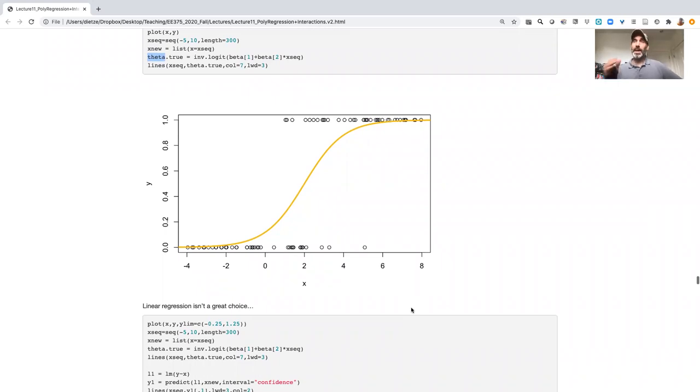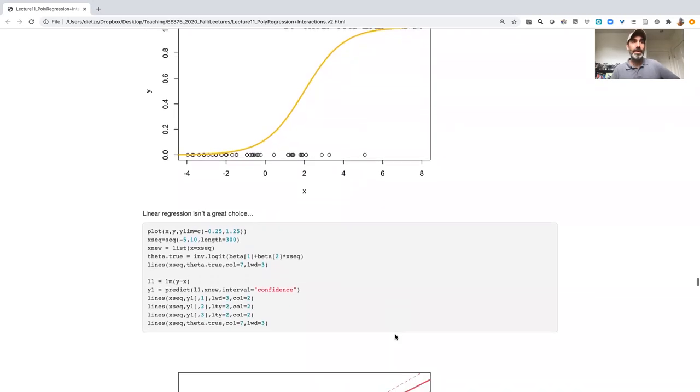Before we dive in, let's just see what happens if we apply the philosophy of: if all we have is a hammer, everything looks like a nail. So if all we have is linear regression, what do we get?